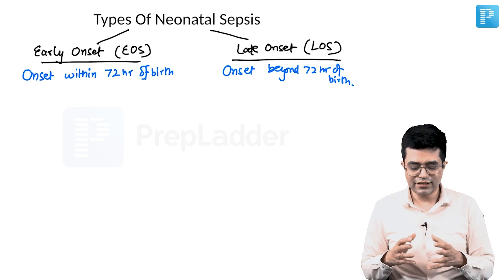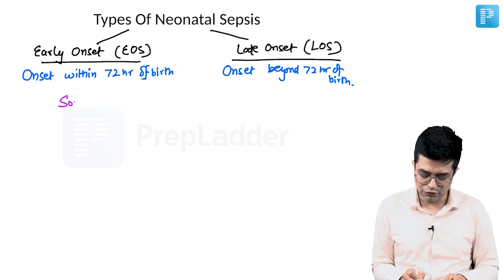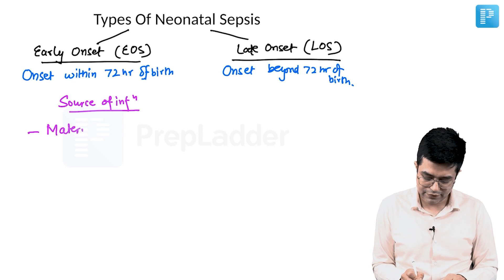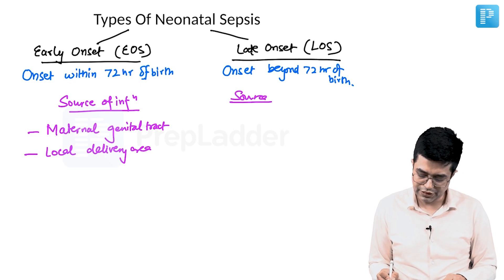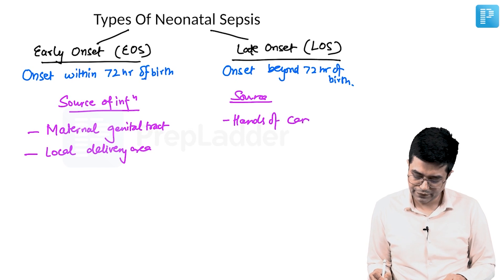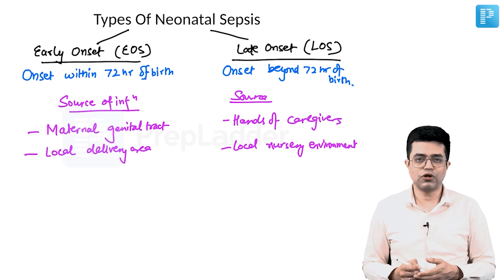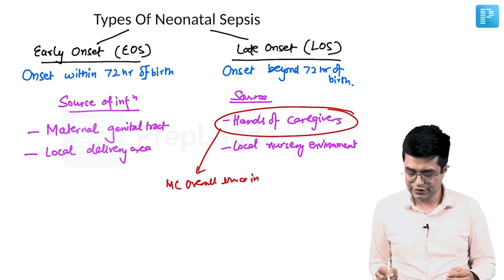There is no specific organism difference between early and late onset sepsis, but the sources of infection are very different. In early onset sepsis, sources are the maternal genital tract and the local delivery area where the child was born. In late onset sepsis, the source is the hands of caregivers and the local nursery environment. In India, the most common overall source of infection for neonatal sepsis is the hands of caregivers.